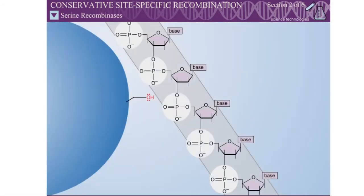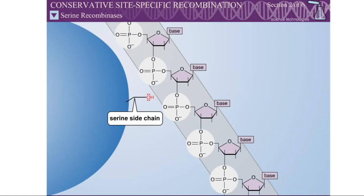For the serine recombinases, the side chain of a serine residue within the active site attacks a specific phosphodiester bond in the recombination site. This reaction introduces a single-stranded break in the DNA, and simultaneously generates a covalent linkage between the serine and a phosphate at the cleavage site of the DNA.